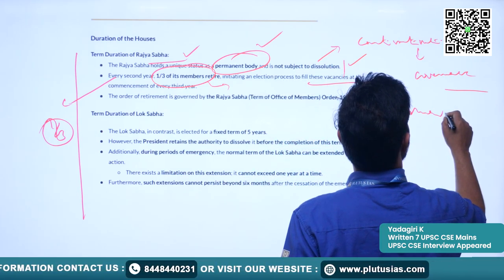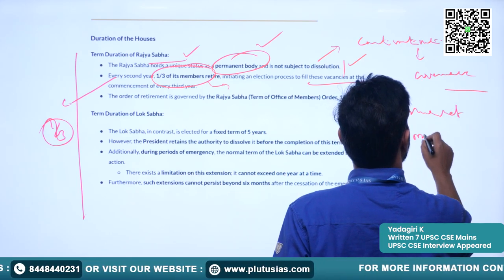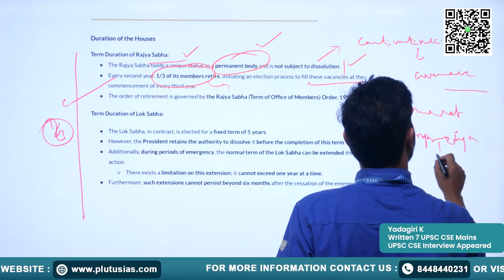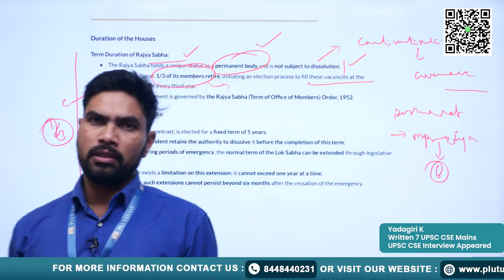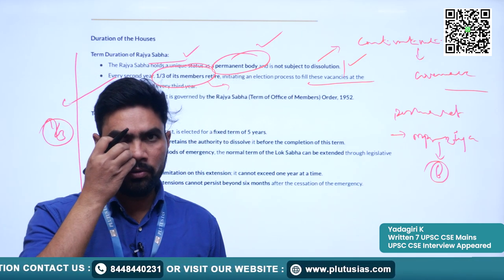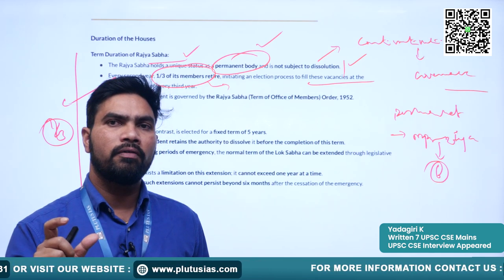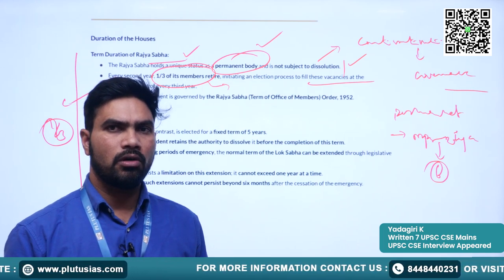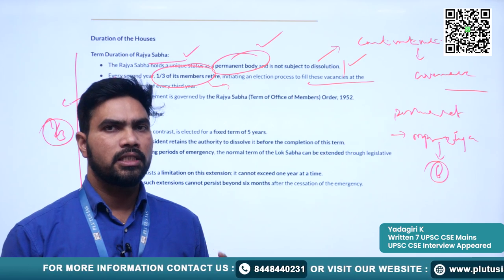The house is permanent. However, when it comes to the MPs of Rajya Sabha, their tenure is six years. Once they are elected to Rajya Sabha, they will be in the member of Rajya Sabha position for six years. However, the tenure of the house itself is permanent — the house is not dissolved. When it comes to the tenure of the member, it is six years.